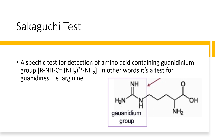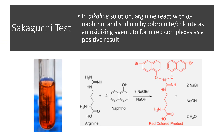The Sakaguchi test is a specific test for the detection of amino acids containing a guanidinium group — in other words, a test for the presence of arginine. Free arginine or arginine residues in proteins react with alpha-naphthol and alkali-hypobromite to give a red-colored complex. When a carmine red color develops, that means arginine is present. In alkaline solution, arginine reacts with alpha-naphthol and sodium hypobromite or chloride as an oxidizing agent to form red complexes as a positive result.